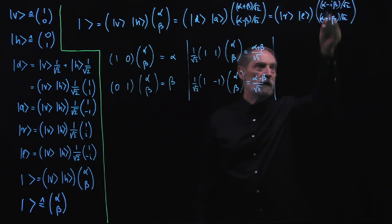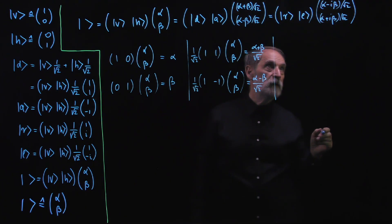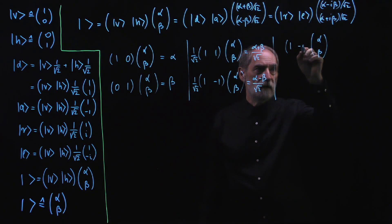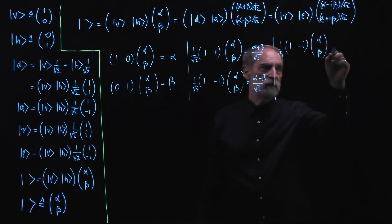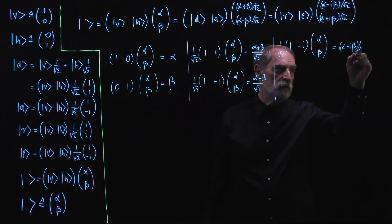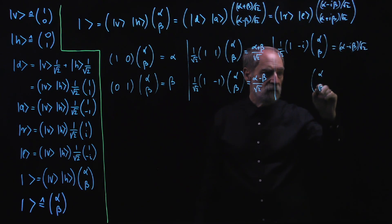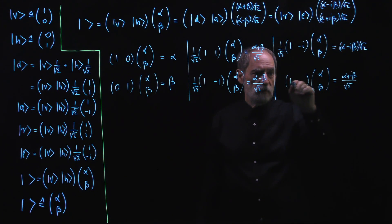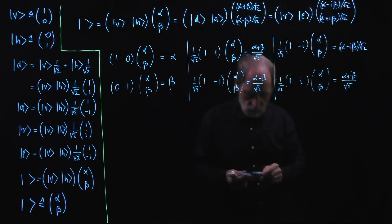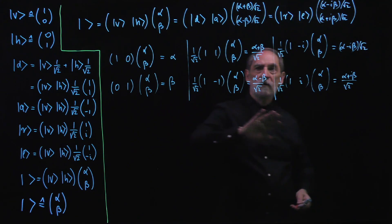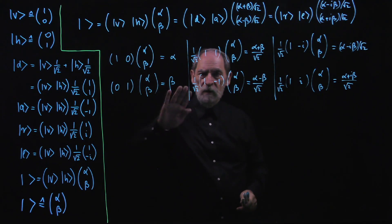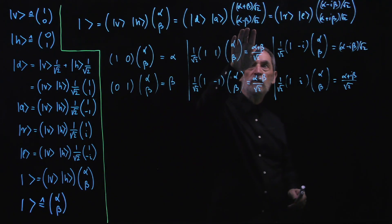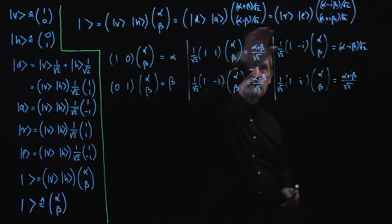To pick out alpha minus i·beta over square root of two, we multiply the column alpha-beta with the row one and minus i divided by square root of two. And to get alpha plus i·beta over square root of two, we multiply with the row one and i divided by square root of two. So for each of these amplitudes, there is a matching row in this formalism that converts the alpha-beta column, referring to vertical and horizontal, into the coefficients corresponding to the other sets of polarizations.